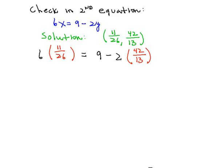Now for practice let's check the solution we just came up with which was 11 over 26, 42 over 13 into one of the equations and I'm going to choose to use the second equation here which is 6x equals 9 minus 2y. So you can see that what I've done down below here is to replace the x with 11 over 26 and the y with 42 all over 13.